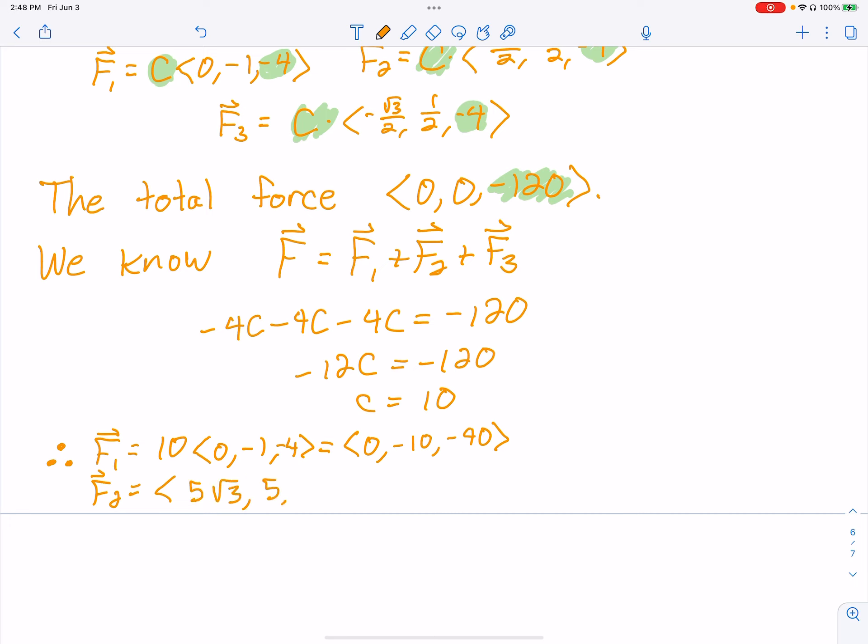F2 is multiplying that through: <5√3, 5, -40>. And then our last one, F3, is <-5√3, 5, -40>. And that's the problem.